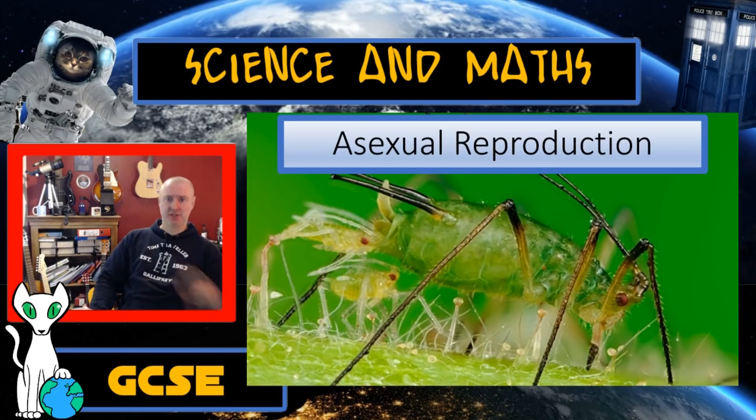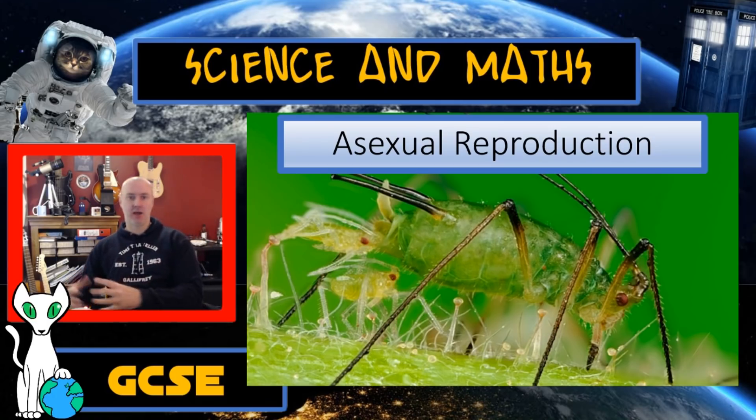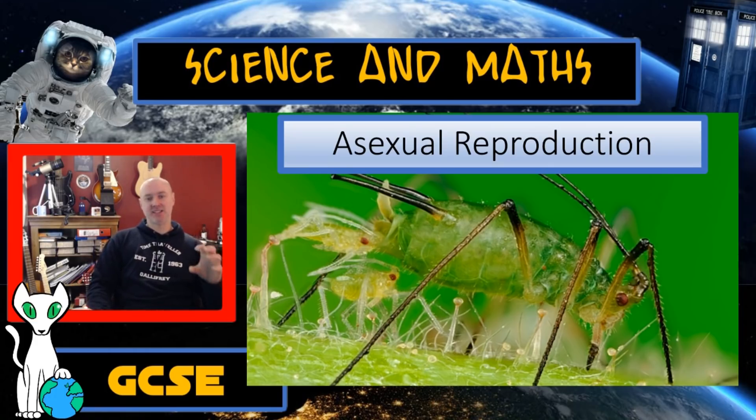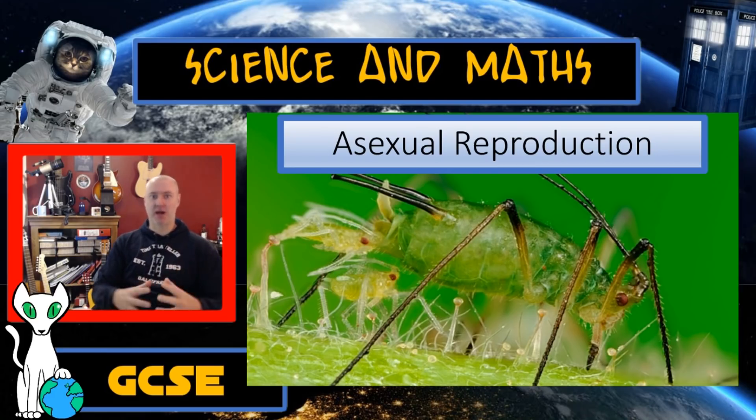Mitosis also has another use. This is a green fly. Green flies reproduce asexually. Asexual reproduction means that you don't need a male. This female has offspring all on her own. Parthenogenesis, virgin birth. The reason she can do this is because inside her reproductive organisms, mitosis takes place, and her offspring are produced by mitosis. In other words, they are genetically identical to the parent. They are clones.